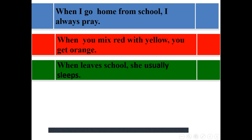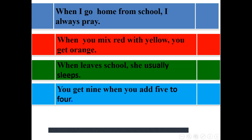Number 3. When she leaves the school, she usually sleeps. She usually sleeps. We say usually, it happens all the time for her. She sleeps. When she goes home from school, she sleeps. Number 4. You get nine when you add five to four. A fact in mathematics always, it happens all the time. When you add five to four, we get nine. That's why we use present simple.